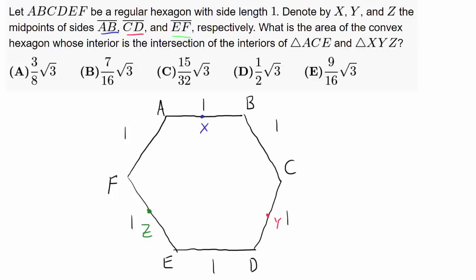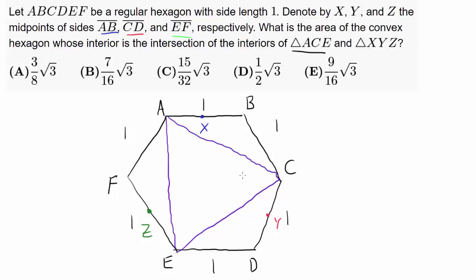What is the area of the convex hexagon whose interior is the intersection of the interiors of triangle ACE — which is this triangle that stretches like this — and XYZ? By symmetry, triangle ACE is equilateral, and XYZ is also going to be an equilateral triangle by symmetry.